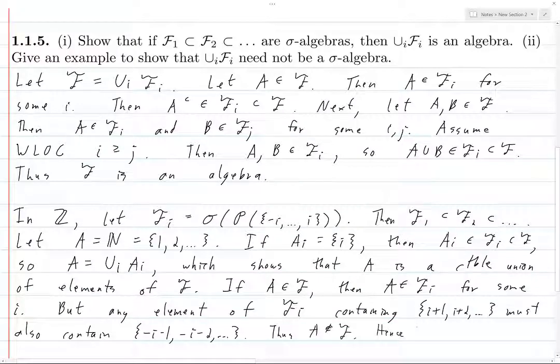and hence, F need not be. Well, I'll just explain the conclusion. So, we've given an example of an ascending chain of sigma algebras such that the union of the sigma algebras is not a sigma algebra. And so, therefore, it need not be the case that the union of an ascending chain of sigma algebras is itself a sigma algebra. It will be an algebra, but it need not be a sigma algebra.